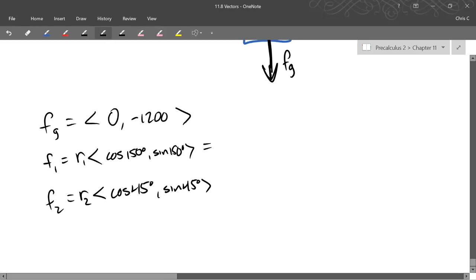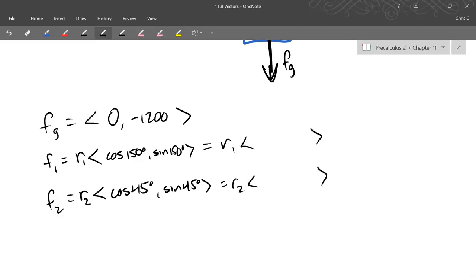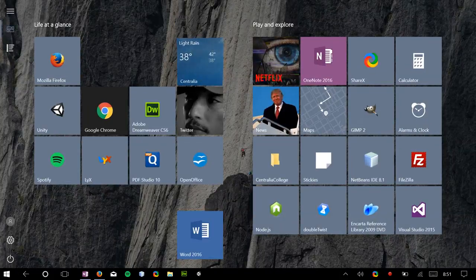So we have all three vectors right here. Go ahead and evaluate cosine and sine and get their values right here. Oh, it's time to go. Time flies when you're doing vectors. So I have to, unfortunately, leave you in the middle of this problem. But what we're going to do is add all three vectors up, set it equal to zero.